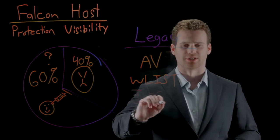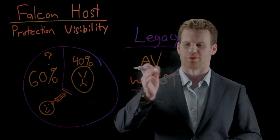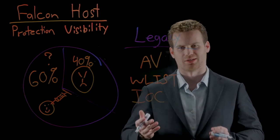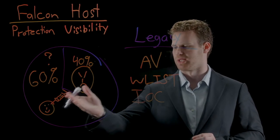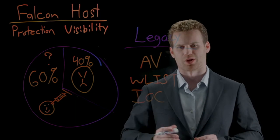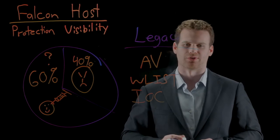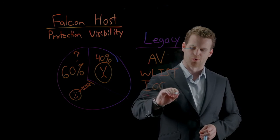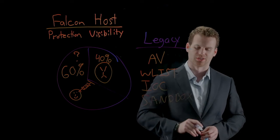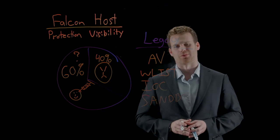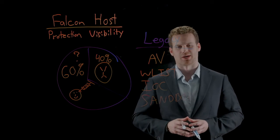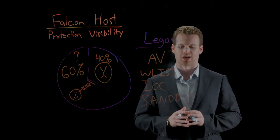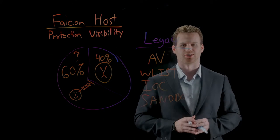Indicators of compromise, or IOCs, are really not that much different from conventional AV signatures. We're still looking for known malicious artifacts left behind by an attacker. Of course, by leveraging legitimate processes and operating inside memory, we can avoid leaving those artifacts behind. Another approach involves sandboxing, and that can take many forms, including network-based detonation and micro-virtualization. Because of the performance limitations inherent with sandbox technologies, we're still typically relying on some sort of whitelisting capability to decide what we put in the sandbox and what we allow to execute normally.